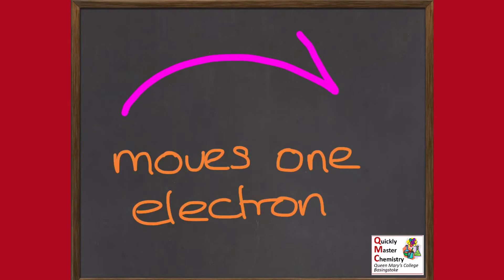The arrow with just half a head, showing the movement of one electron, is specifically for radical mechanisms and that will be dealt with in the third video in the series.